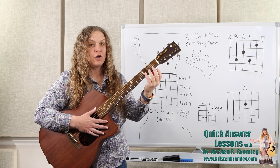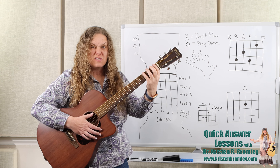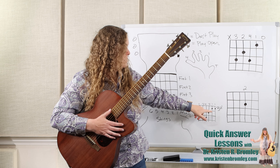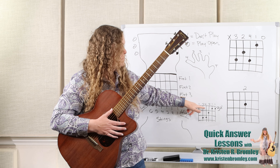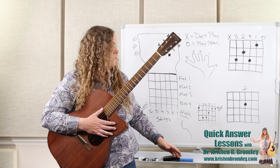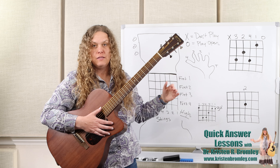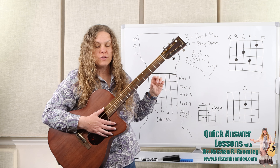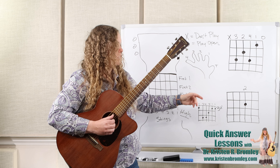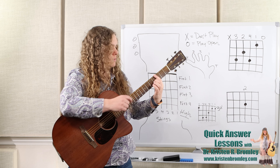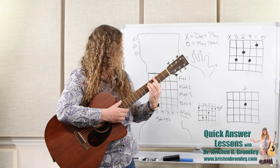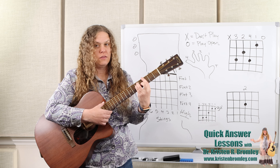Sometimes tablature diagrams go beyond open position — meaning the open strings plus the first three or four frets. When that happens, we'll see a number out here telling us what fret this first space is going to be. So if '3' is written there, that means fret 3, then 4, 5, 6, and so on. In this case it's creating a barre chord — index finger covers everything at fret 3, middle is at fret 4 on the third string, ring finger at fret 5 on the fifth string, and pinky at fret 5 on the fourth string, giving us a G chord barring at the third fret.